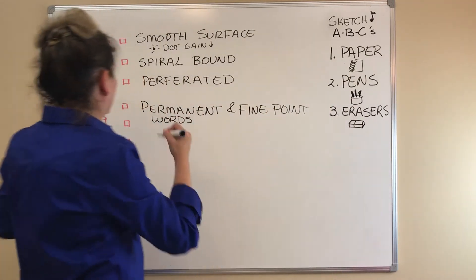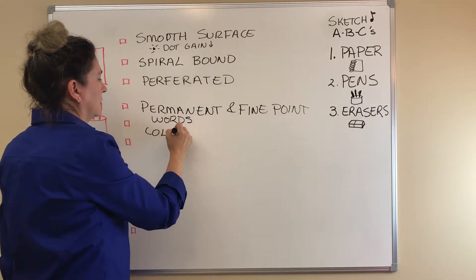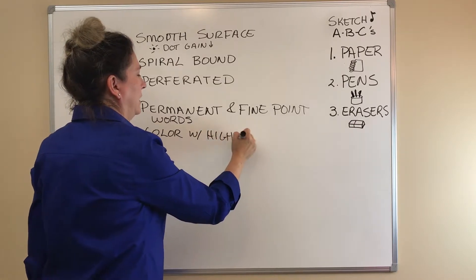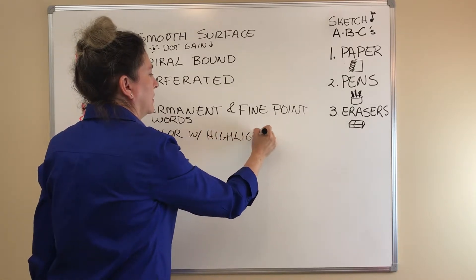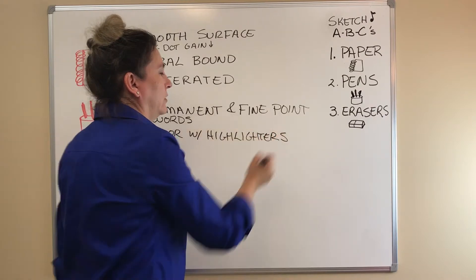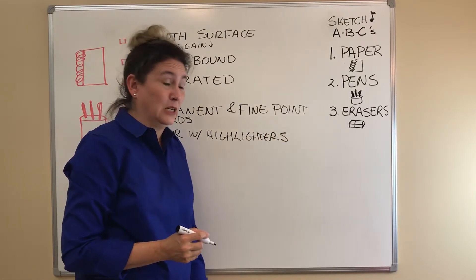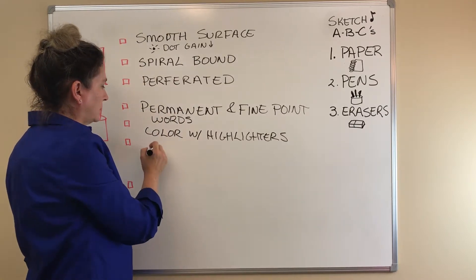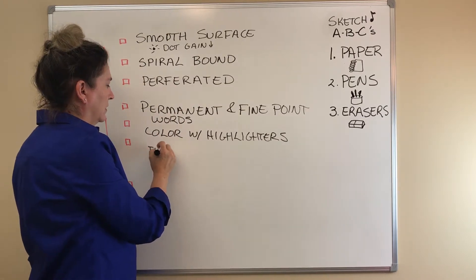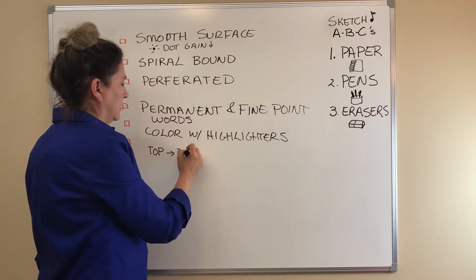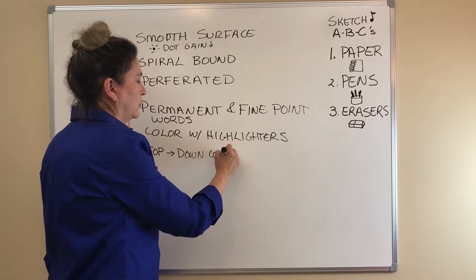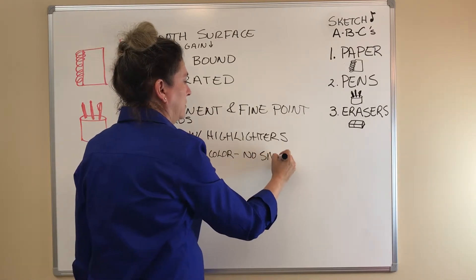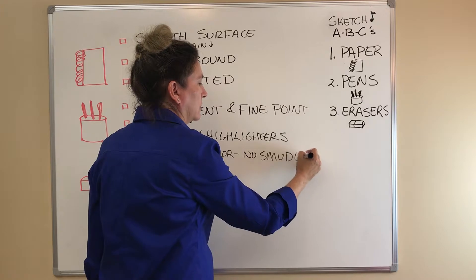So you add color with highlighters. Now another trick is highlighters, being liquid, are going to be damp and can smudge. So you want to watch out for that and do top down color so that you don't smudge.